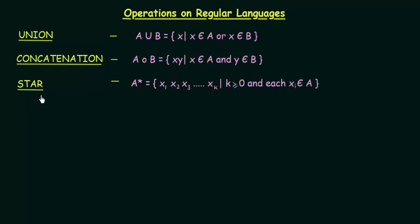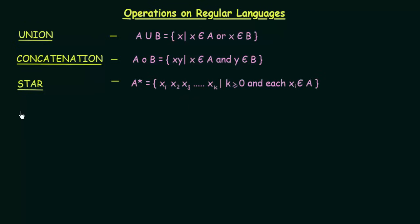The next operation is Star. Unlike Union and Concatenation, in the Star operation we have only one set involved. Performing the Star operation on set A means the set of X1, X2, X3 up to XK such that K is greater than or equal to 0 and each X belongs to A. Simply put, you take as many symbols as you want from set A and join them together in any way you like — that is what Star means. All three operations will become clearer with the example below.